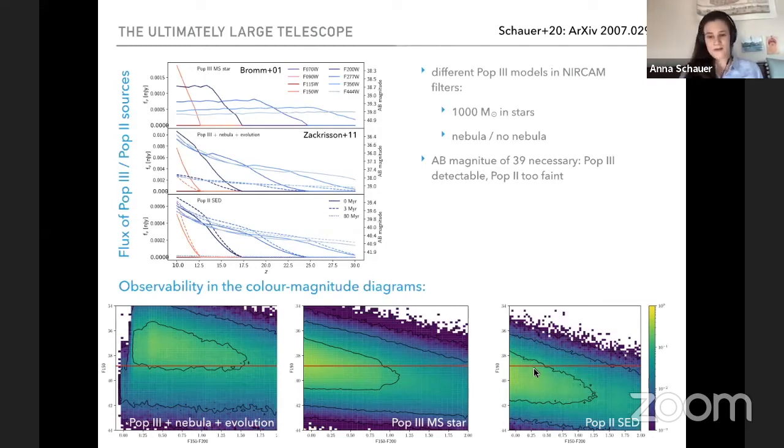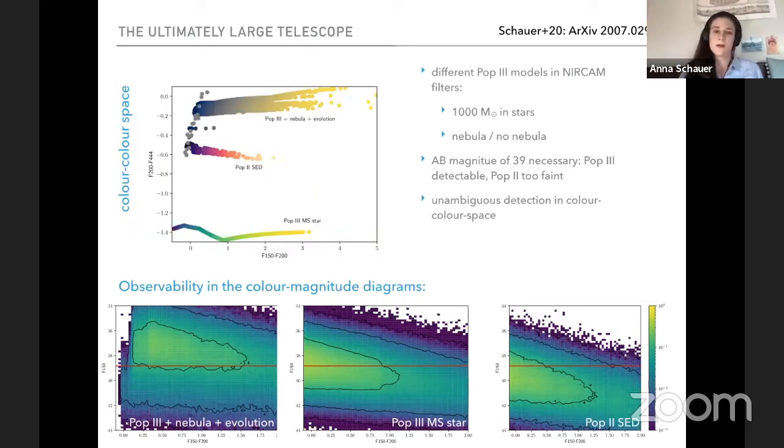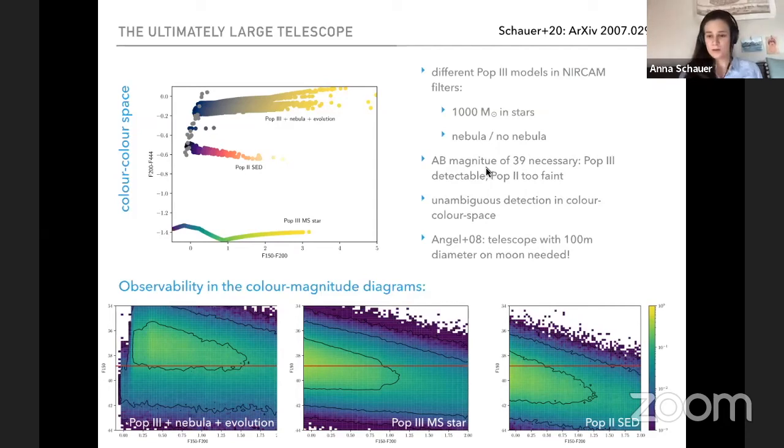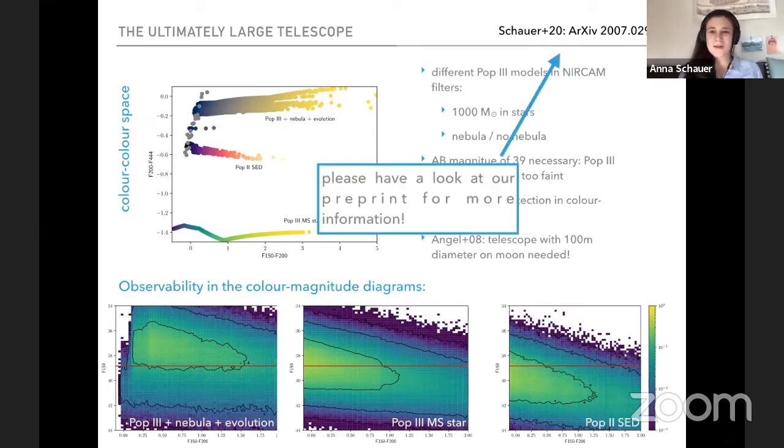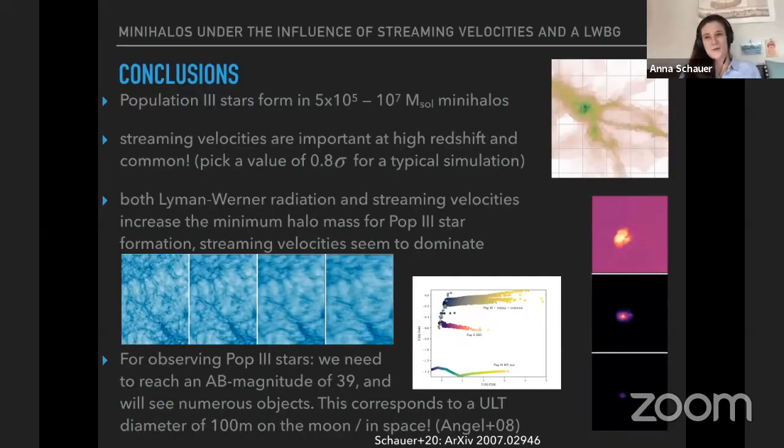And we put them through the NIRCam filters of James Webb. And what we find is when we have an AB magnitude of 39, then we can detect population three stars. So we can see the majority of the population three stars in both models. But we can't really see the pop two stars. And this is exactly what we want. And we also check that those can be detected and can be clearly identified as population three stars. Those here are brown dwarfs and they occupy only a minimal fraction of the space. And then there was a paper by Engel et al 2008, which suggested a 100 meter telescope on the moon. And this is the telescope necessary to reach this 39th magnitude. So if you're interested in this thought experiment, I would invite you to check out yesterday's archive. And I leave you with my conclusions and I hope you have a few questions for me. Thank you.